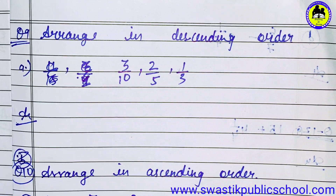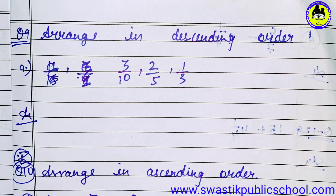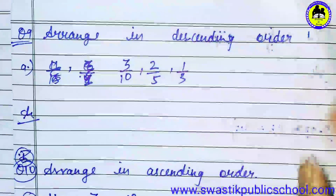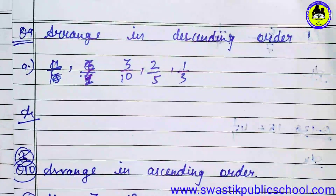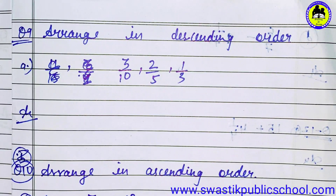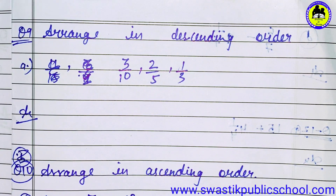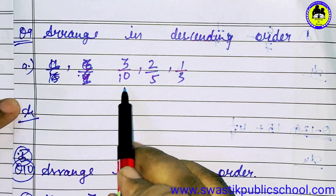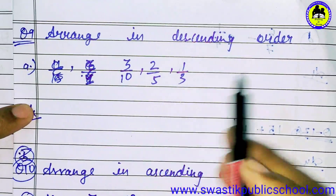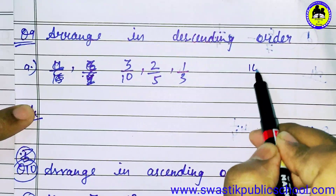Next, question number 9 — arrange in descending order. To place them in descending order, children, first of all we will find the LCM of the denominators.